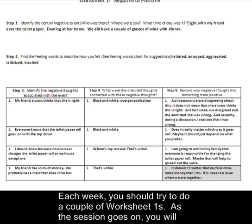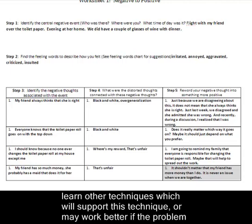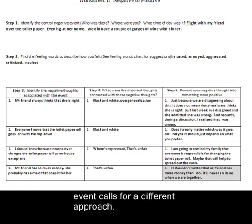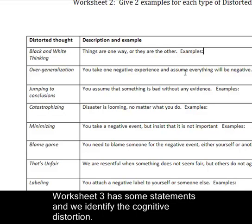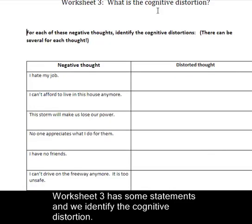Each week you should try a couple of worksheets. As the session goes on, you'll learn other techniques that will support this one, and these new techniques may even work better if the problem or event calls for a different approach. Don't forget to complete worksheet two and worksheet three. Worksheet two gives you the distorted thought name — such as black and white thinking — describes it, and asks you to give an example. Go through each and try to come up with an example to help you understand what these distorted thoughts are. Worksheet three is about cognitive distortion: come up with some negative thoughts, look at each one, and try to identify what distorted thought goes with it.